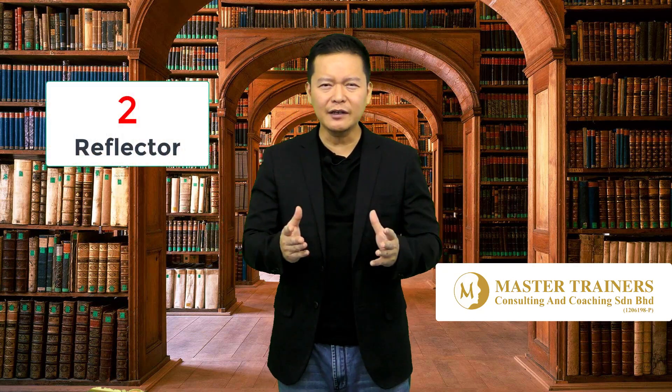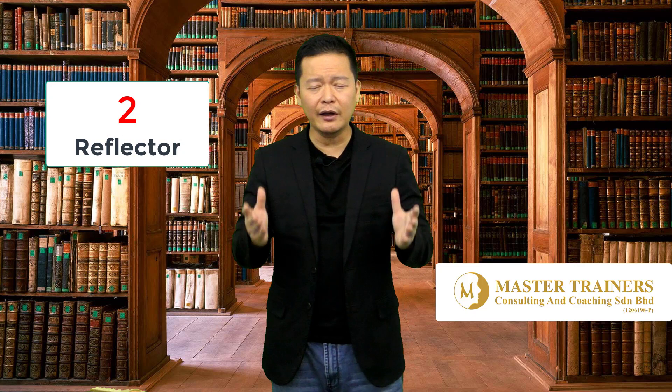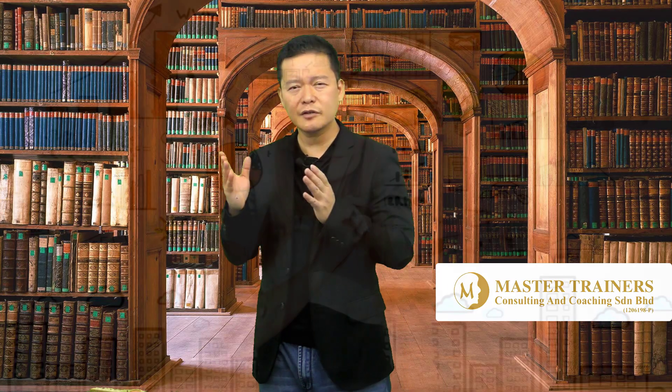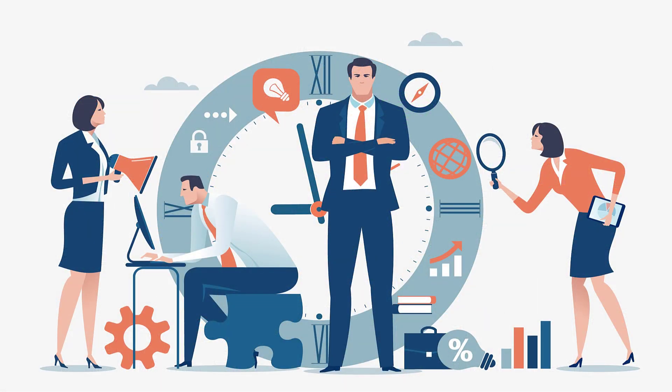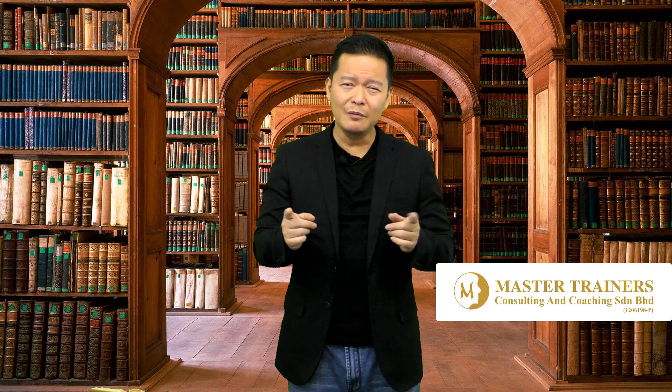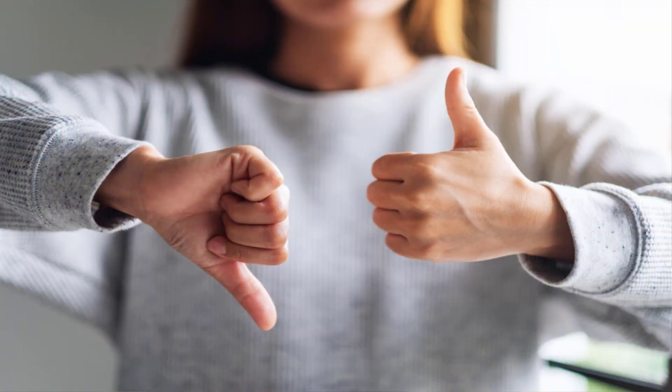The second type of audience is what we call the reflector. A reflector is a person who likes to reflect on information, concepts, and theory — they like to think about it before they agree or disagree with you. So the reflector will need time before they say I agree or I disagree.